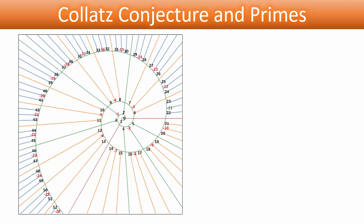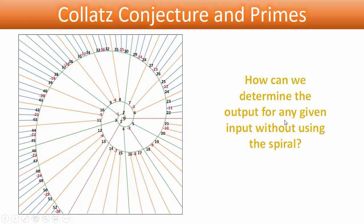The question that we could ask here is how can we determine the output for any given input without using the spiral? We know we can count on the spiral forward and backward, but can we, just by being given the input value, calculate the output?